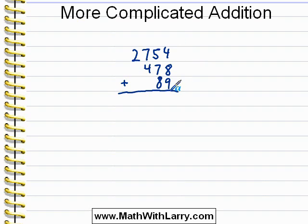Now even though we're adding three numbers, the procedure is still the same as what we've learned. I'll start on the right, we always start with the ones column. I'll add 4 plus 8, which is 12, and then I'll add 9, which gives me 21.